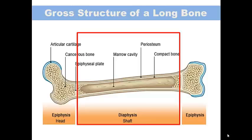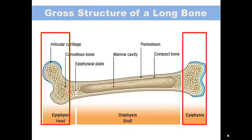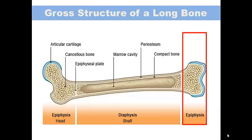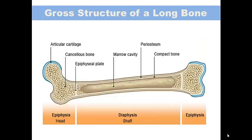The shaft has a cavity in the center called the marrow cavity. In adults, the marrow cavity is a storage area for fat and contains yellow marrow. In infants, it contains red marrow and is a site for formation of RBCs. The two ends are the epiphysis. Each epiphysis is composed of spongy bone lined by a thin layer of compact bone. The area at the junction between the epiphysis and the diaphysis is called the metaphysis.